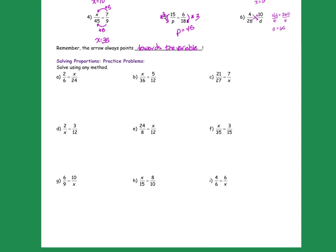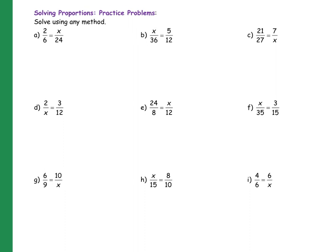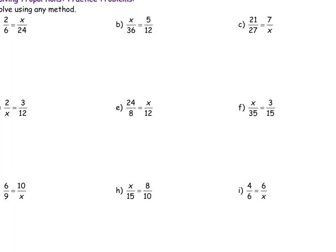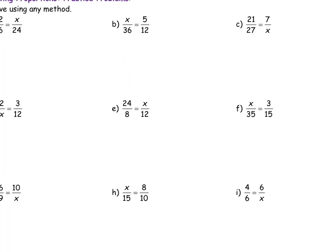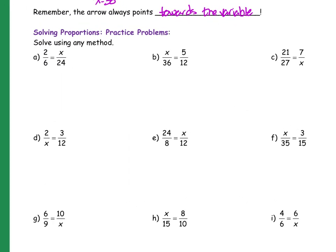There's nine problems for you guys to do really quick. So if you can solve those nine problems for me. Tell me what x is or whatever variable happens to be. I think they're all x's. It's okay if I just give you the answers, and then if you need me to go over one of them, let me know. For A, x equals 8. For B, x equals 15. For C, x equals 9.